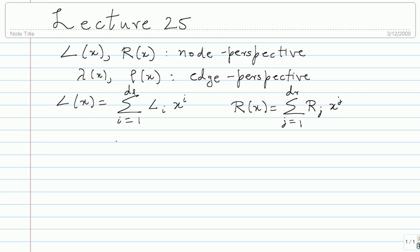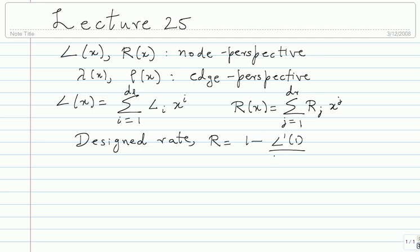There was a nice simple way of writing the design rate — maybe not the actual rate but very close to it. The design rate worked out as 1 minus L-prime(1) divided by R-prime(1). That was a convenient way of writing what the design rate would be.